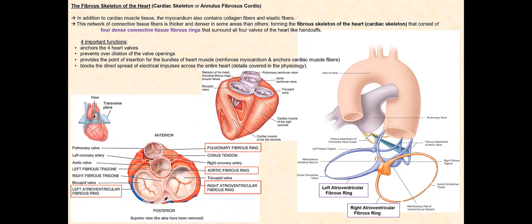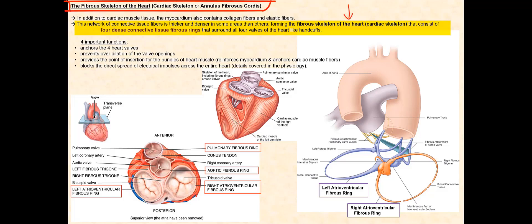In addition to cardiac muscle tissue, the myocardium also contains collagen fibers and elastic fibers. This network of connective tissue fibers is thicker and denser in some areas than others, forming the fibrous skeleton of the heart, also called the cardiac skeleton or annulus fibrosis cortis.